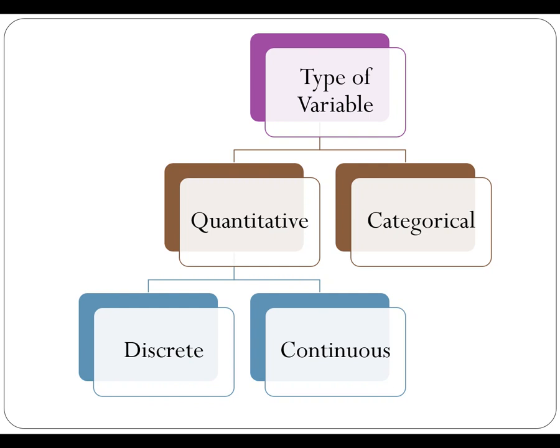There are two types of quantitative variables: discrete quantitative variables and continuous quantitative variables. Discrete variables are measurements that have gaps between the values. For example, household size — you would have one person, two people, three people, four people — those have gaps because you can't have a fraction of a person. But discrete variables aren't only whole numbers: shoe size is another example. You buy shoes in increments of halves — a 7, a 7.5, an 8, an 8.5 — and there are no values in between a 7 and a 7.5 in U.S. shoe sizes. So think about measurements that have gaps in between them.